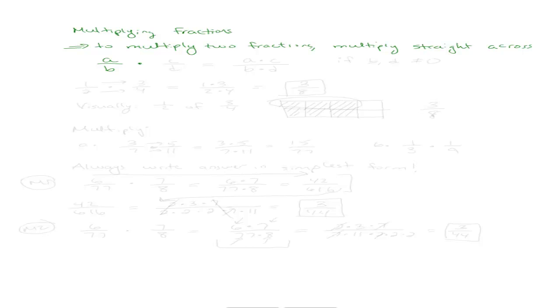So let's say we have the fraction a over b, and we want to multiply that times c over d. I'm just going to multiply straight across, so the numerator is a times c, and the denominator is b times d. And of course, because we can't divide by zero, b and d must not equal zero.